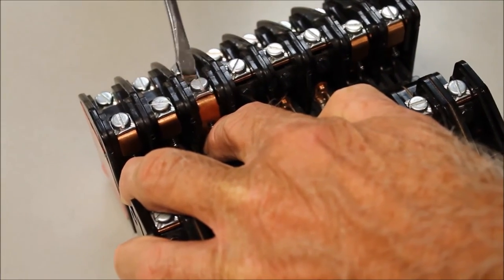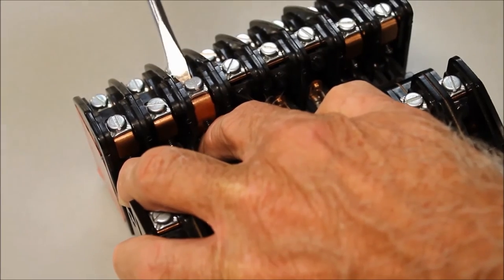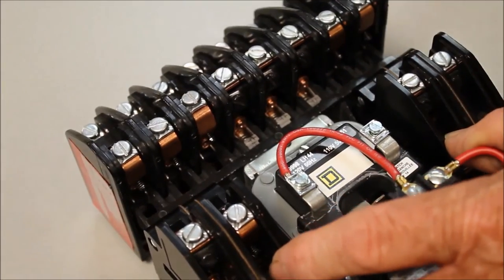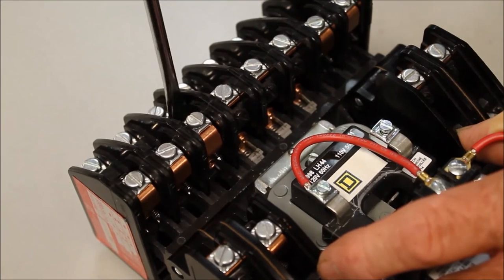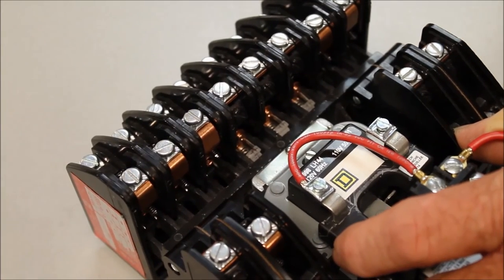We'll now go in and secure the mounting screw. The contact has been changed from normally open to normally closed. The normally closed symbol will appear at the top of the contact block.